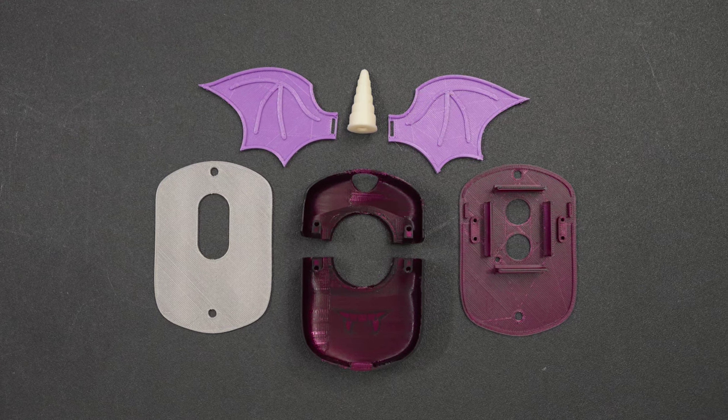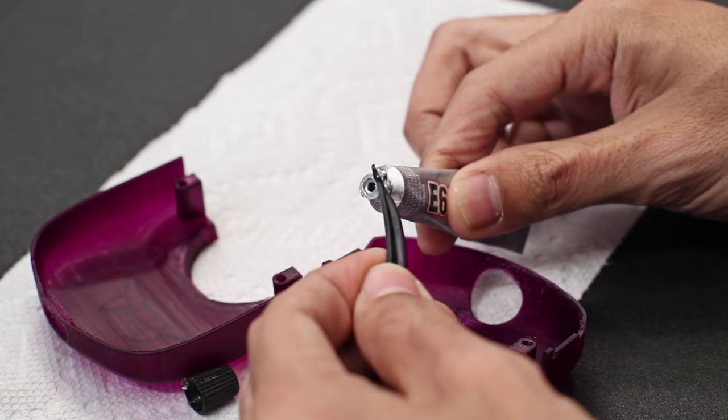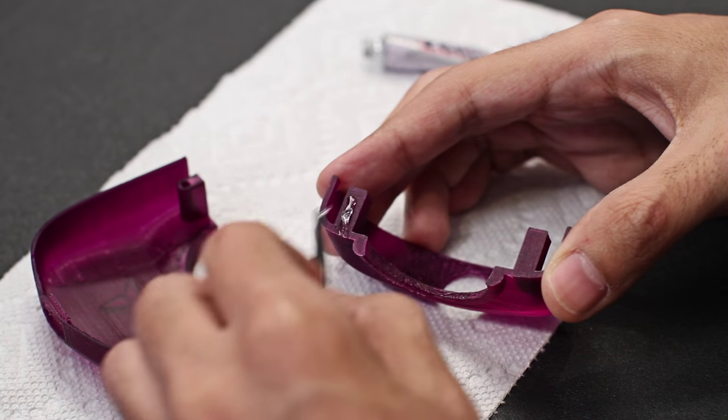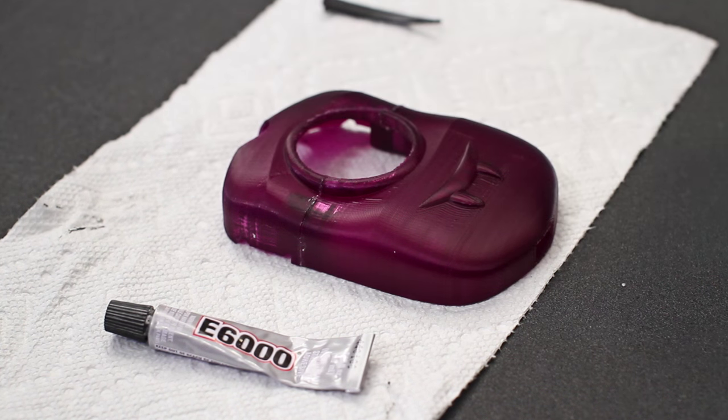You can download and modify the parts for free, linked below. Use E6000 adhesive to permanently glue the two face halves together. Use a toothpick to spread the glue and let the parts dry for several hours.